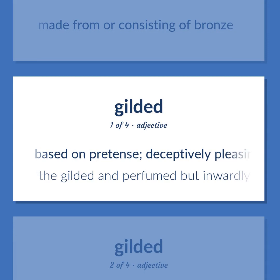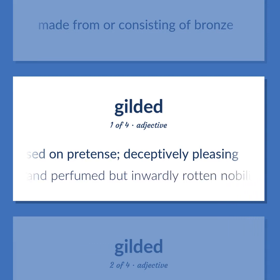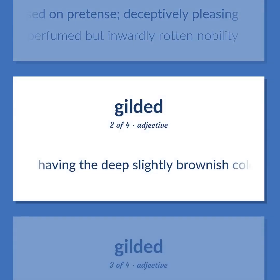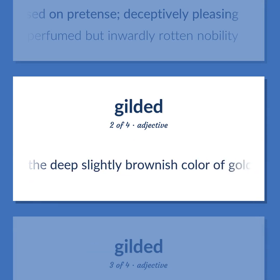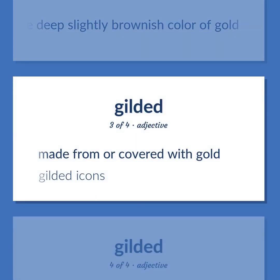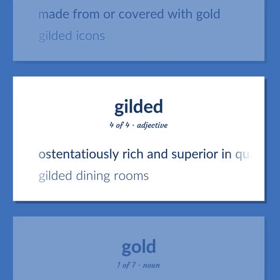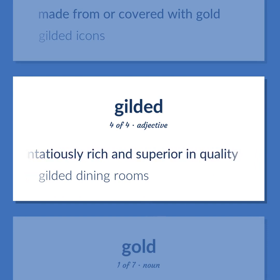Gilded (sense 1): based on pretense; deceptively pleasing — 'the gilded and perfumed but inwardly wrought in nobility.' Gilded (sense 2): having the deep slightly brownish color of gold. Gilded (sense 3): made from or covered with gold — gilded icons. Gilded (sense 4): ostentatiously rich and superior in quality — gilded dining rooms.